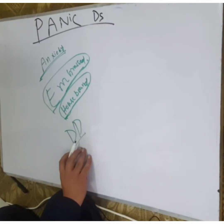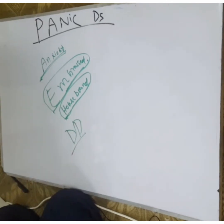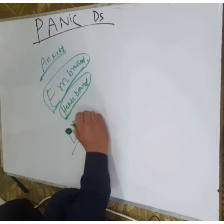For the differential diagnosis of panic disorder, a variety of cardiovascular, respiratory, endocrine, and neurological conditions must be excluded. For example, 20% of patients who present with syncope have a primary medical complaint but are actually diagnosed with a mood or anxiety disorder.